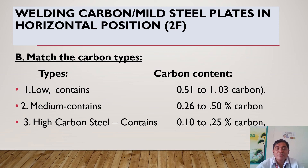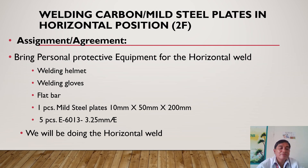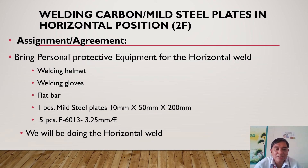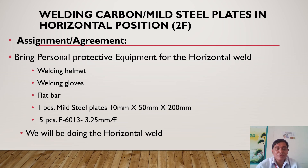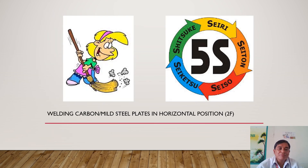For our assignment and next session, you need to bring your protective equipment for horizontal welding: your welding helmet, gloves, and flat bars — two pieces of mild steel plates, or you can use one just to illustrate the horizontal position. Also bring five pieces of welding rod E6013.